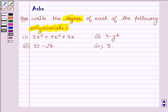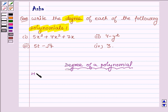As we know, the highest power or the exponent of the variable in a polynomial is called the degree of the polynomial. Therefore, let us write it down. Degree of a polynomial is the highest exponent of or the highest power of the variable.